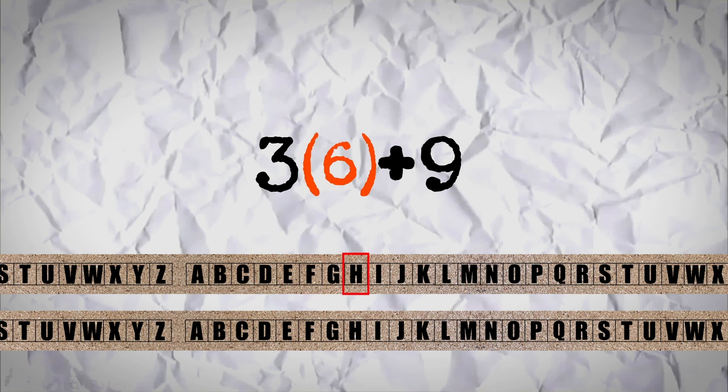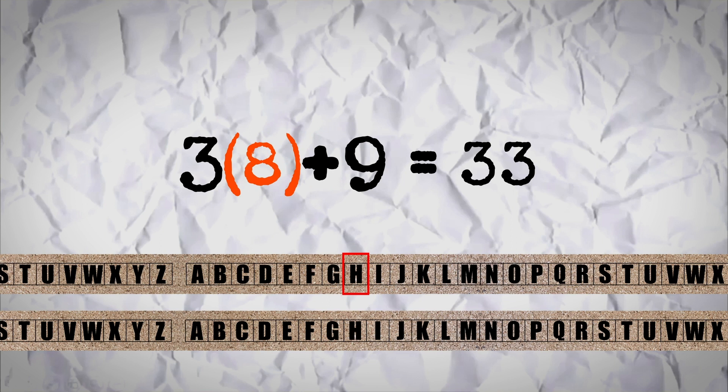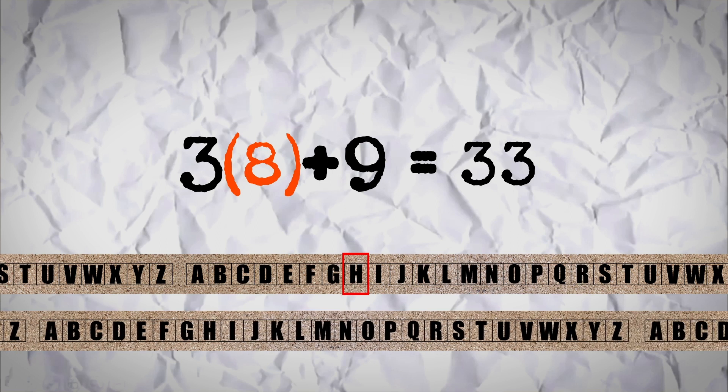If H, with a place value of 8, has to be encoded, we first calculate its value using the rule. For x equals 8, 3x plus 9 becomes 33. Since the English alphabet only has 26 letters, counting in circular fashion makes sense — this is called the modulo rule in mathematics. So we get the desired letter which is 7 places after Z, that is G.